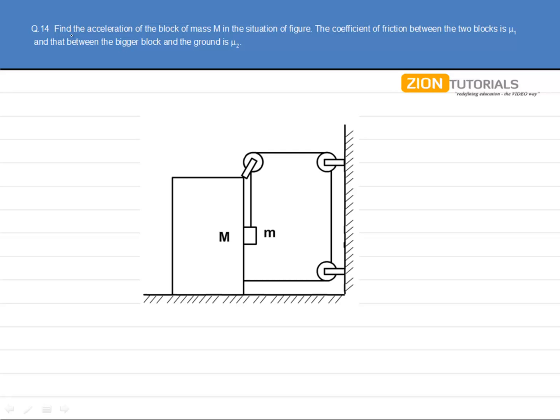As the question says, find the acceleration of the block of mass m in the situation of figure. The coefficient of friction between the two blocks is μ1 and that between the bigger block and the ground is μ2.